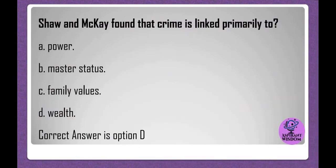Shaw and McKay found that crime is linked primarily to: A. Power. B. Master status. C. Family values. D. Wealth. Correct answer is option D.